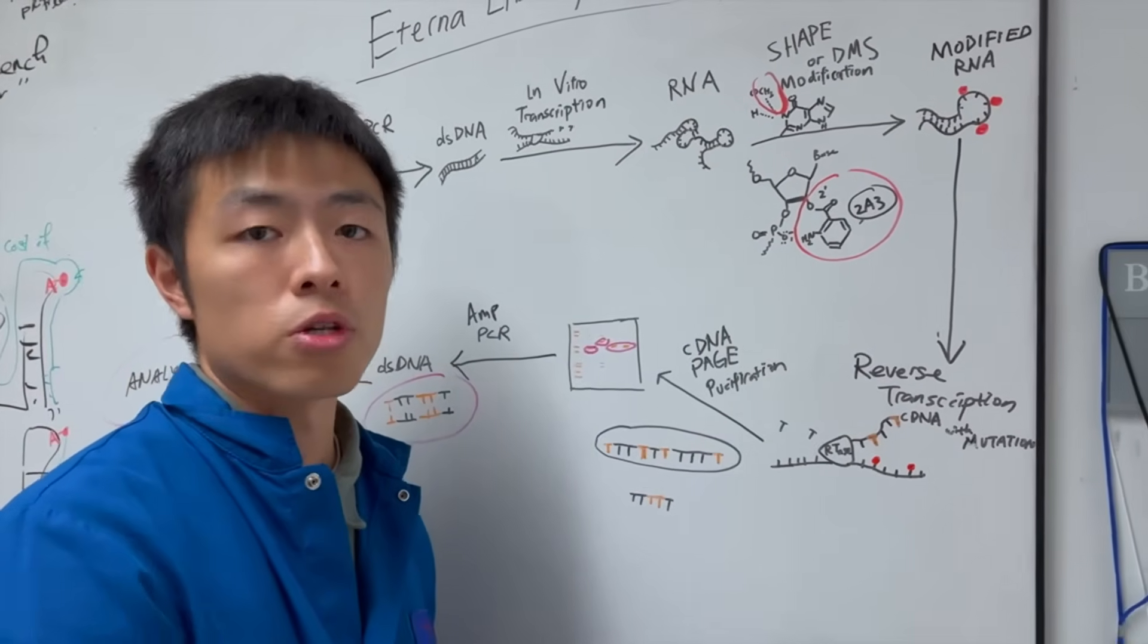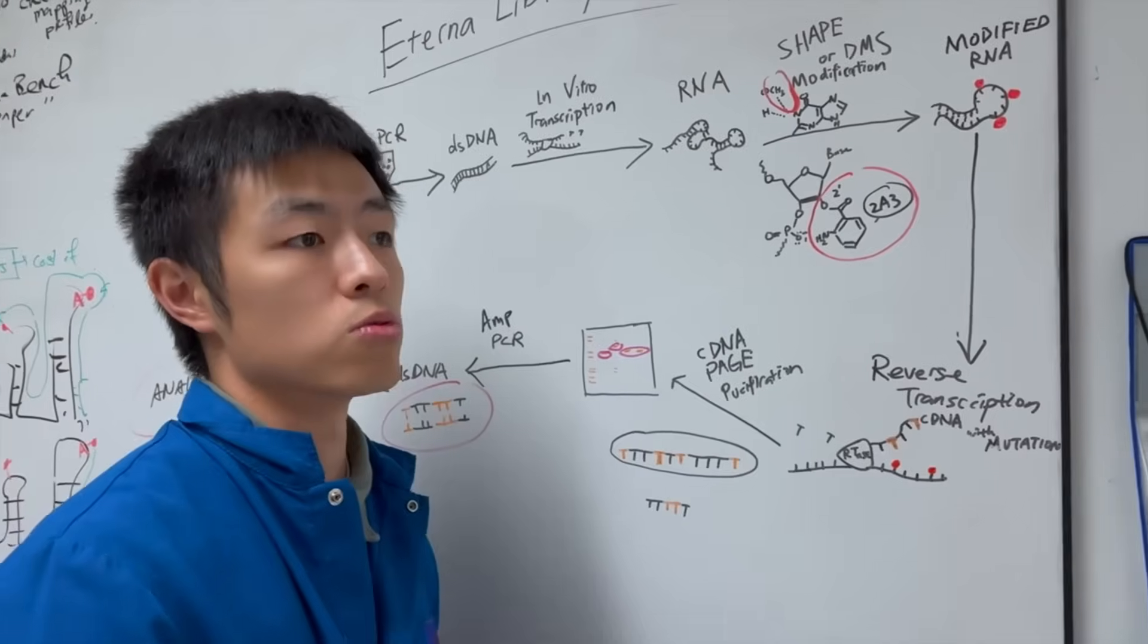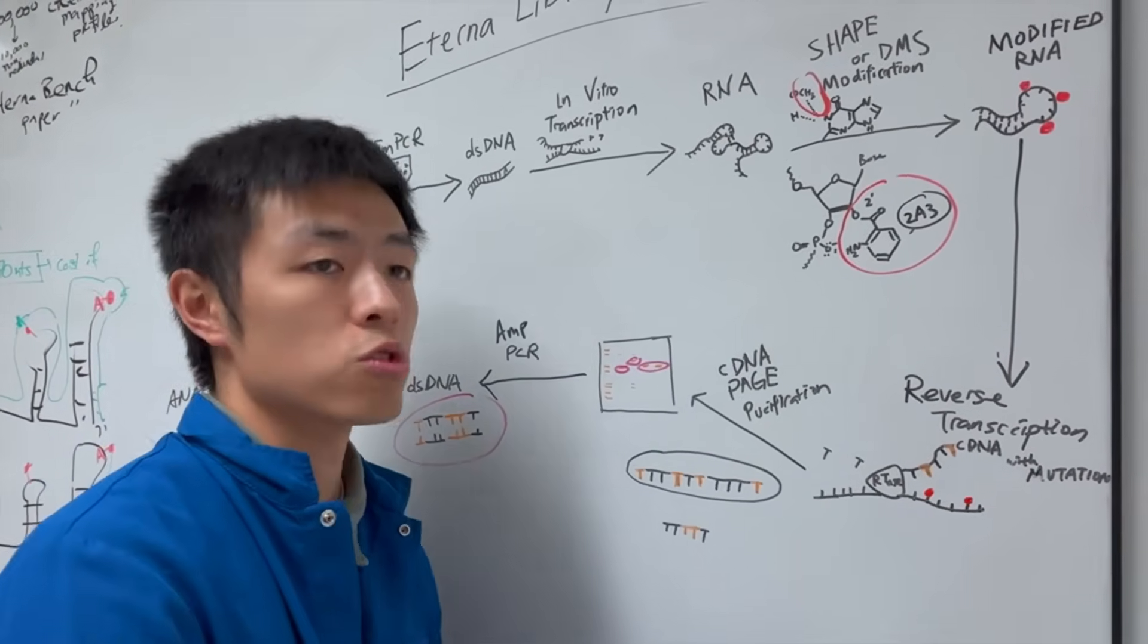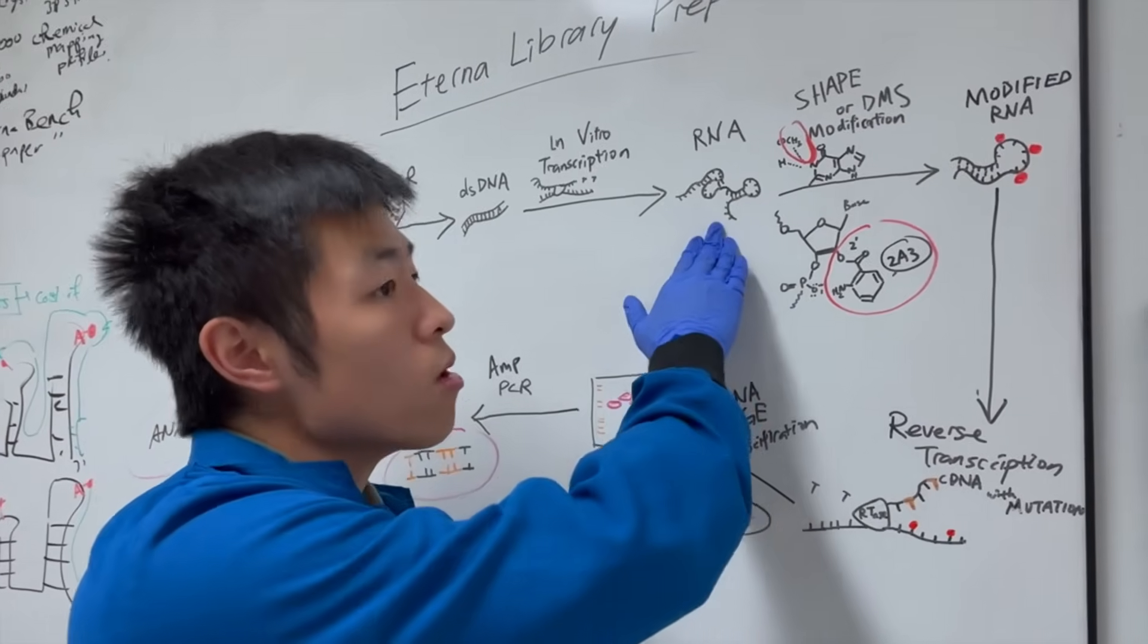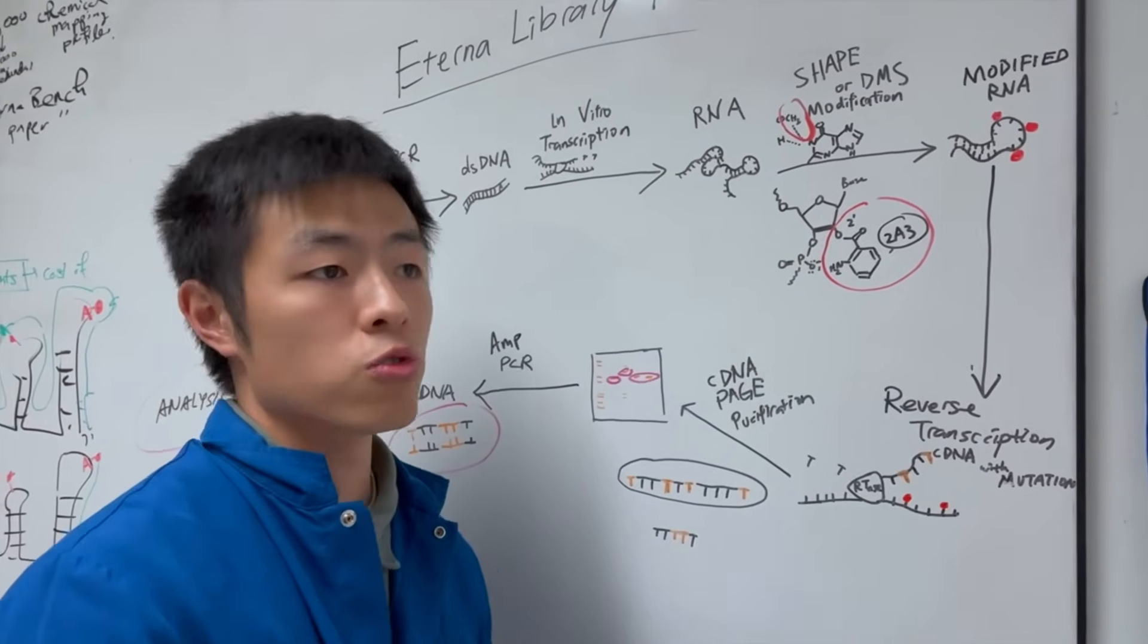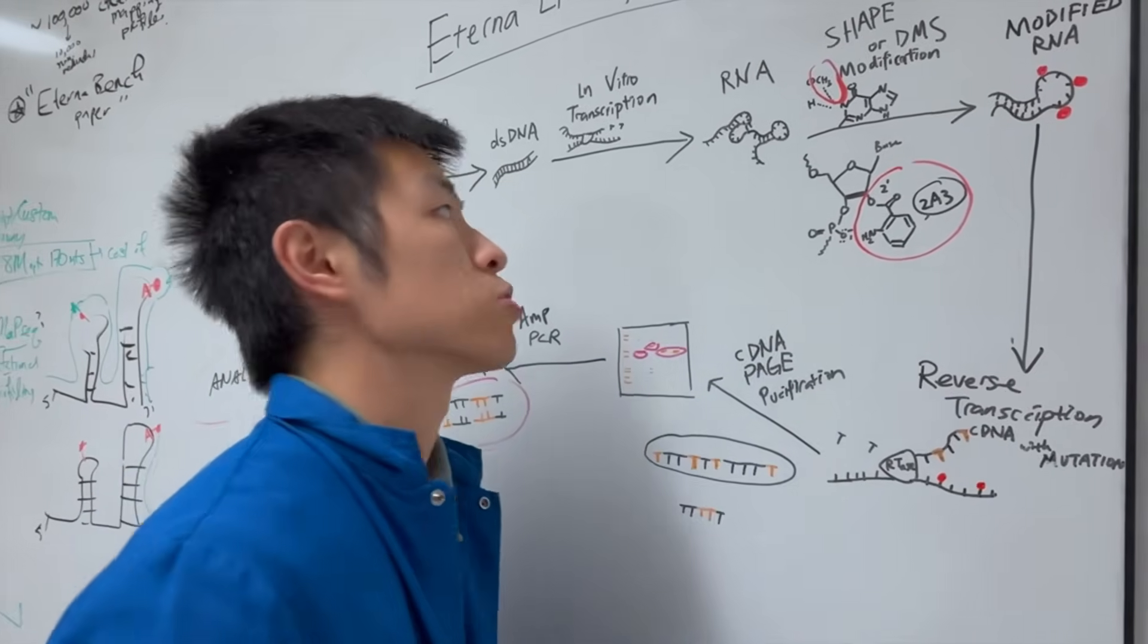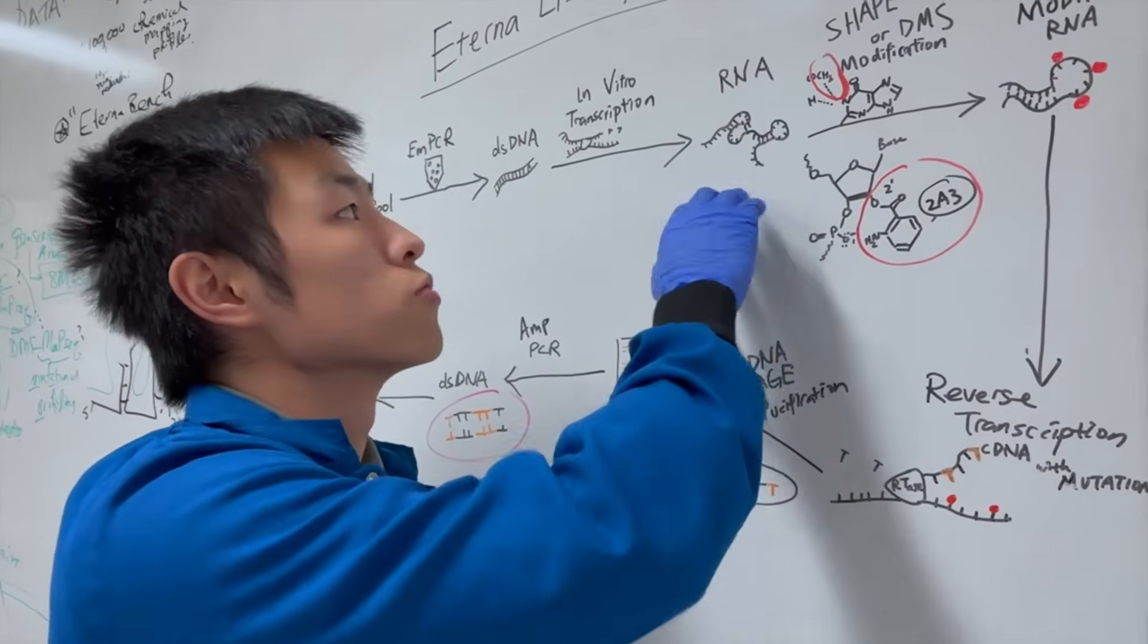We need to refold it using magnesium ions to restore or to show off this interesting structure of the RNAs. So, how are we going to capture this structural information? How are we going to take a snapshot of this structural information of the RNA?